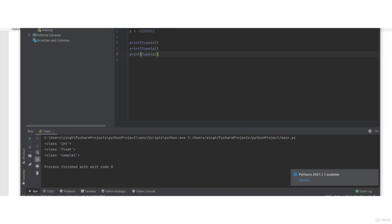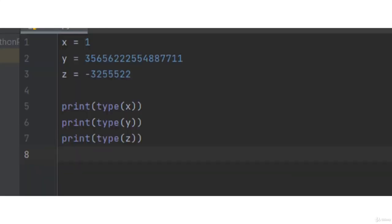Let's open our PyCharm. So x is equal to 1, y is equal to a long number, z is equal to a negative with a long number.